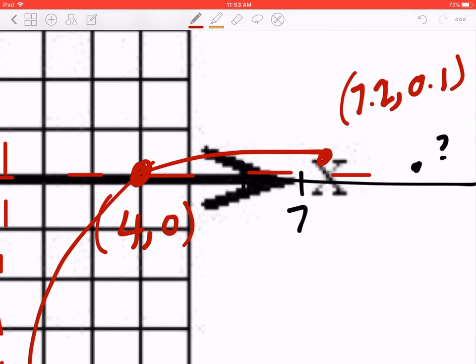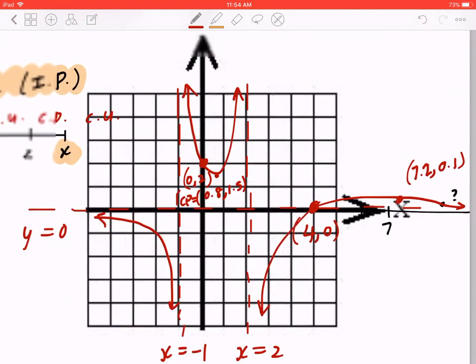And this is the part you want to pay attention to. It starts decreasing concave down, continues to decrease concave up. So that is the function f(x), which equals x minus 4 divided by x squared minus x minus 2.